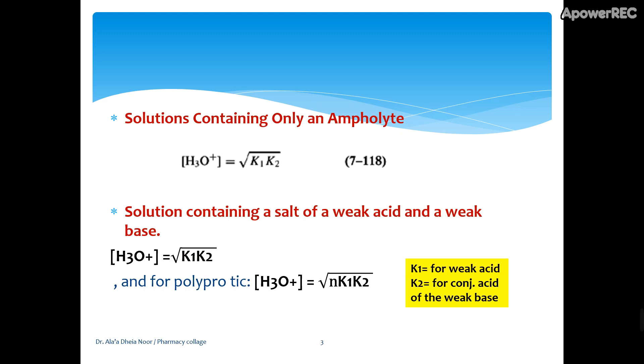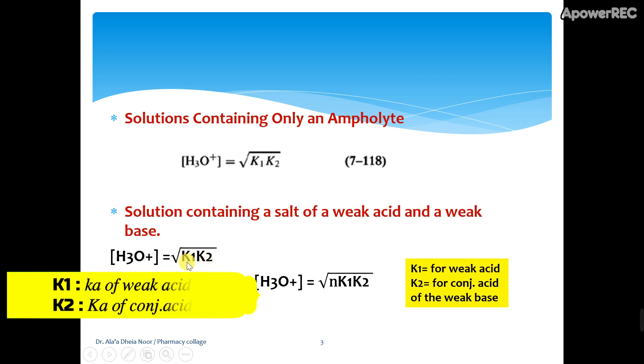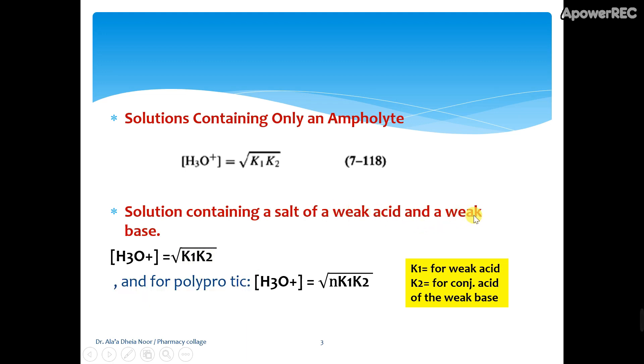The acidity constant of a weak acid is K1. For the weak base, we have Kb and we convert it to Ka because K2 is the conjugate acid. If it's polyprotic, we multiply K1 and K2. K1 is for weak acid, K2 for conjugate acid.